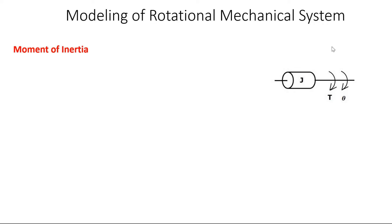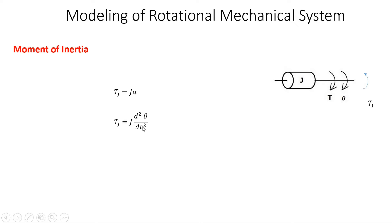First, consider moment of inertia. Say the element has moment of inertia J; we apply a torque in the clockwise direction, so there will be angular displacement theta in the same direction. This element will oppose the applied torque by an equivalent opposite torque Tj, which equals J·alpha, where alpha is the rotational acceleration. Since alpha equals d²θ/dt², we get Tj = J·d²θ/dt². Therefore T = J·d²θ/dt², analogous to mass in the translational system.